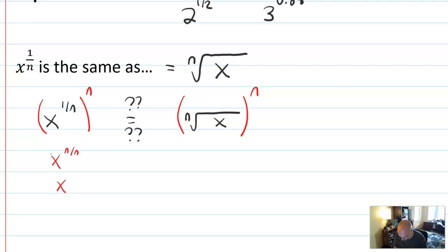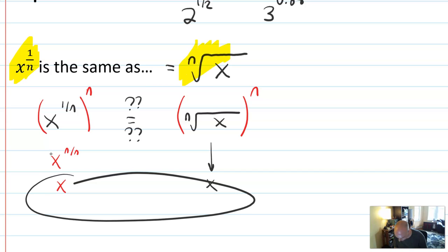And the nth root of x to the n, by definition, would also equal x. And so if you have two things, when you do the same thing to both things, and you get the same thing, what does it mean? It means the original things must have been the same.